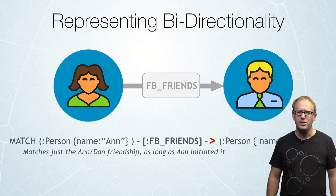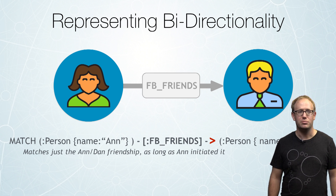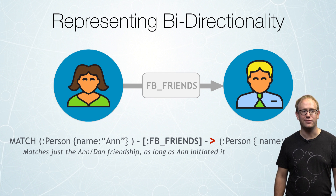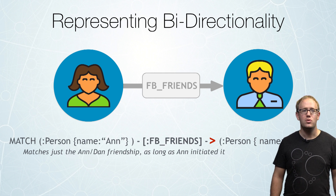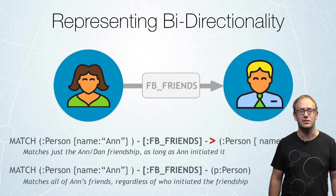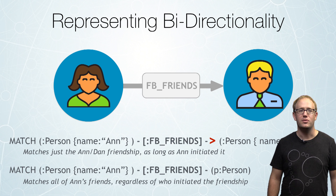But what if we want to find the relationships regardless of who initiated the relationship? We just want to find all people who are friends in our graph. You can easily do that by omitting the greater than symbol — by omitting the directionality of the relationship when querying the data.